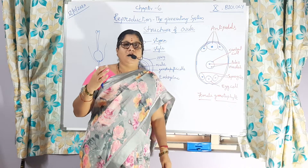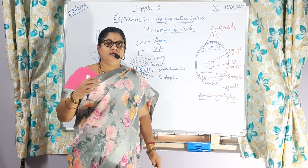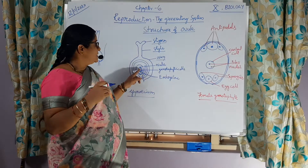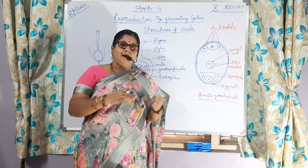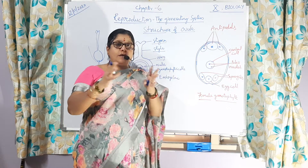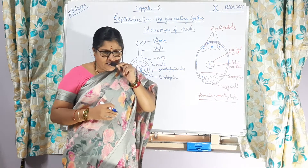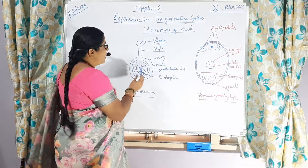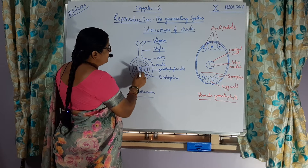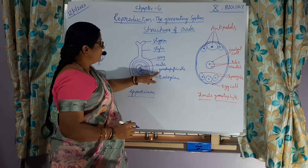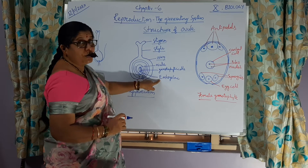different plant species are there. In all the different plant species, the ovules may be one, two, three, hundreds, or even thousands in number. Then, at the center of the cell, we are going to observe our ovule. Inside that, we are going to observe a female gametophyte, or embryo sac.